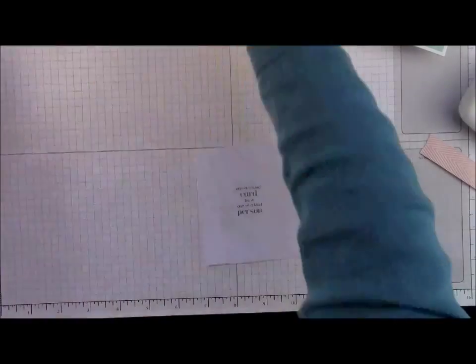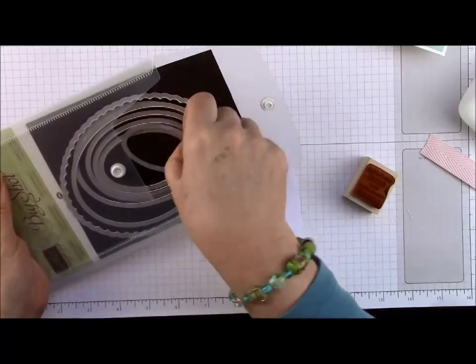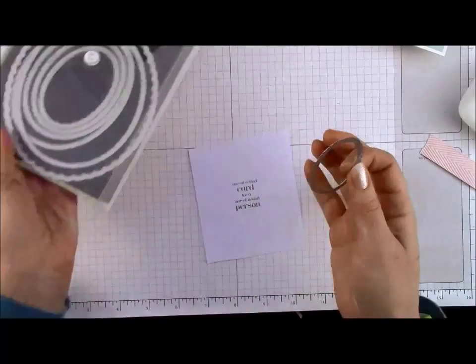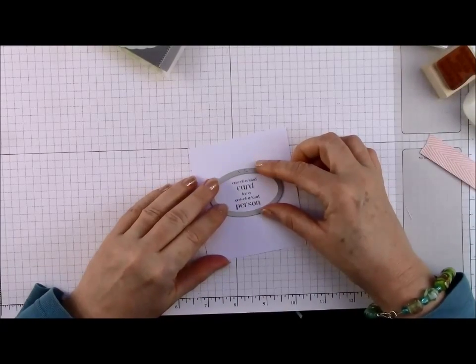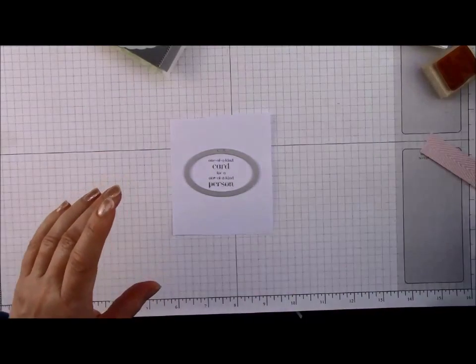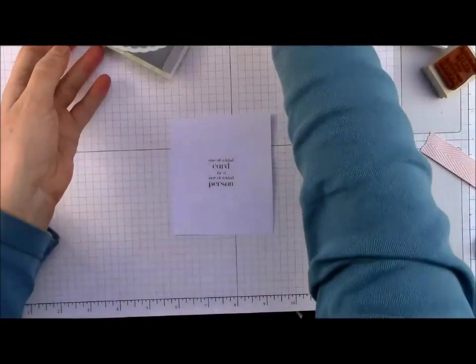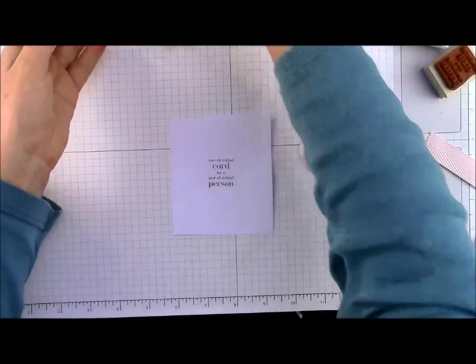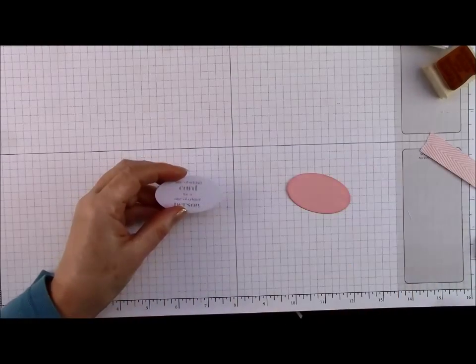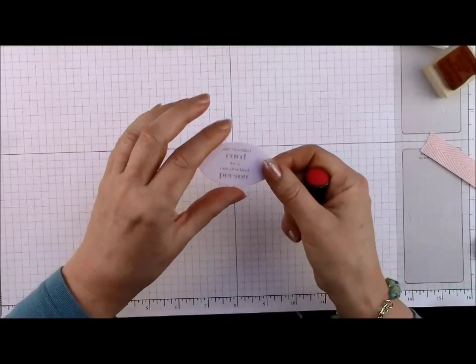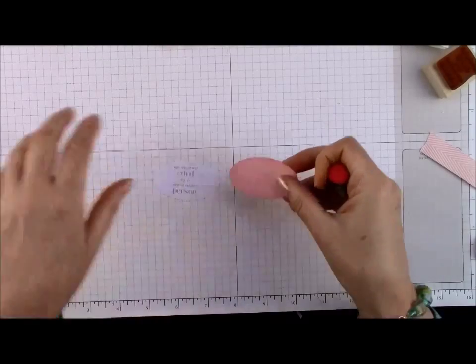And then what I did was I used the Ovals Framelit collection. Now you can use a punch or any of the framelits that you own. And pop that on there and cut it out. Die cut it with my machine. And I've just done that to save a minute or two. So I think I need some new cutting plates on my machine. It's playing up a little bit. So I thought I wouldn't subject you to watching me do that. So I've got my sentiment there die cut. I also die cut a piece of Blushing Bride cardstock.